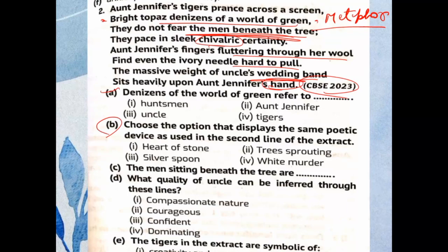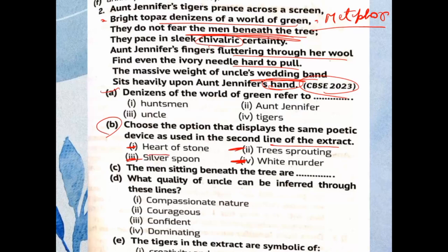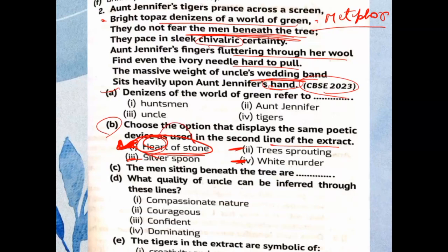Part B: Choose the option that displays the same poetic device — metaphor — used in the second line of the extract. From the options — 'trees sprouting white,' 'a silver spoon,' 'heart of stone' — the correct answer is 'heart of stone,' because it compares a person's cruel nature to stone without using 'like' or 'as,' making it a metaphor.